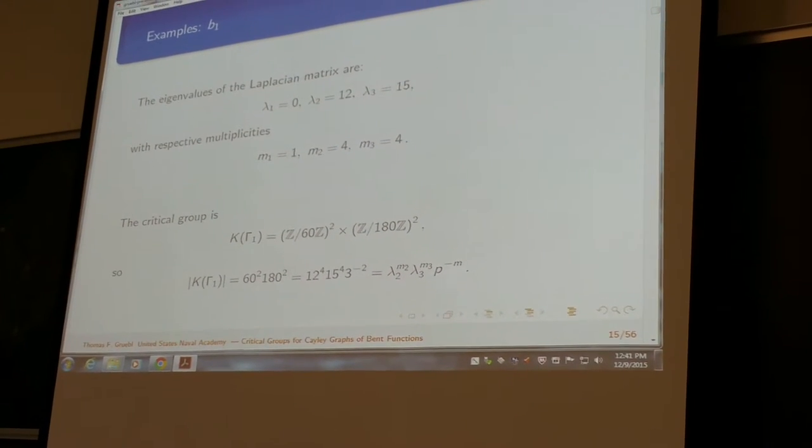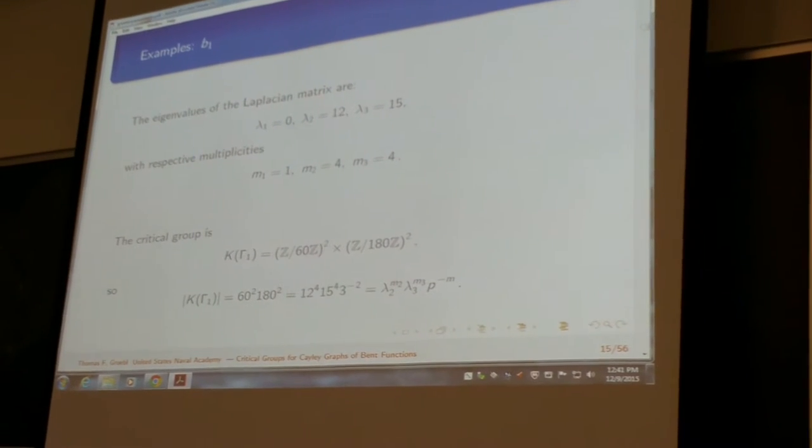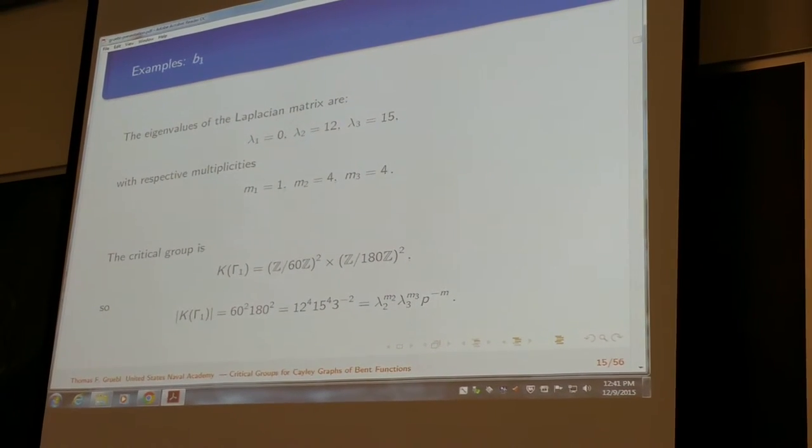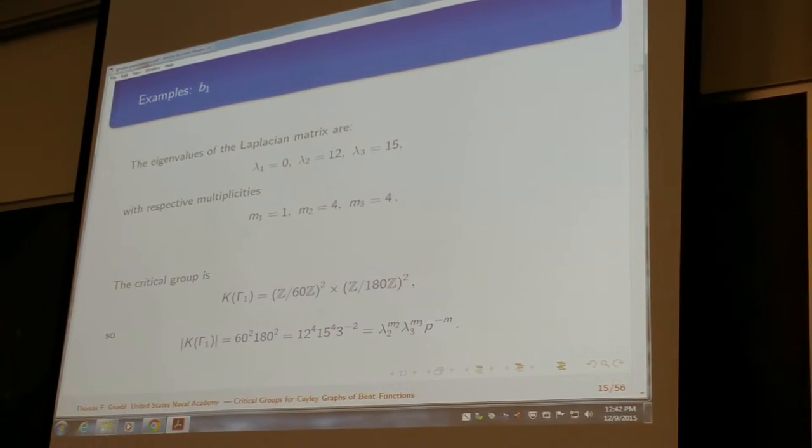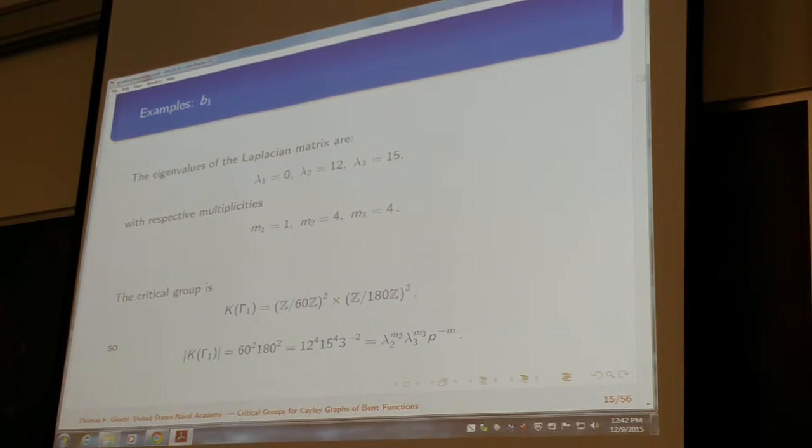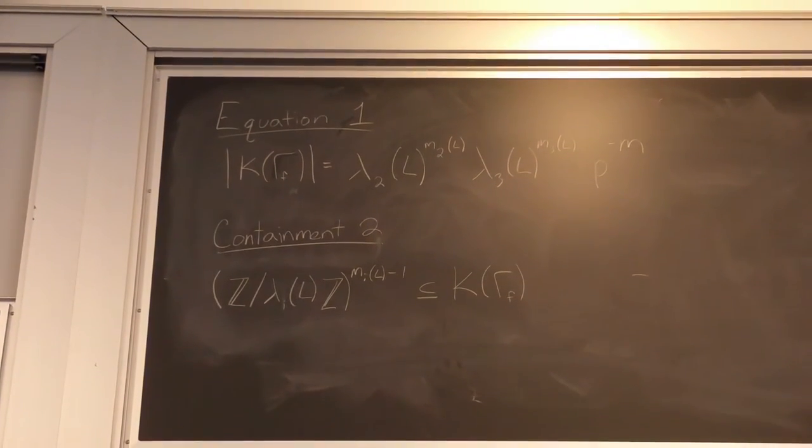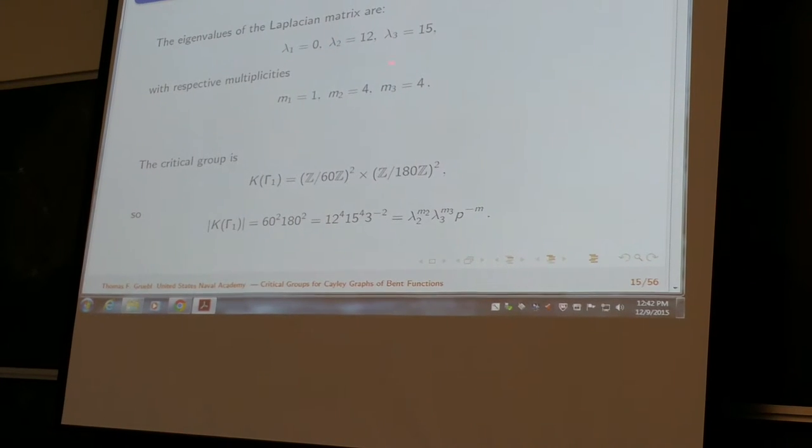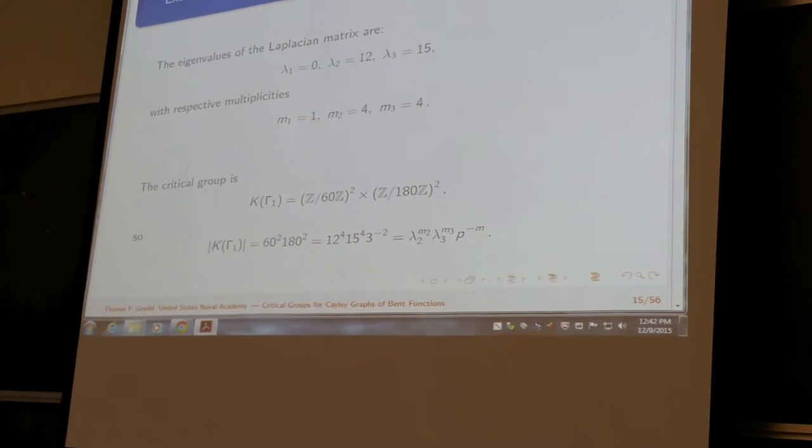So, what we really care about is the eigenvalues of the Laplacian, which here are lambda 1 equals 0, lambda 2 equals 12, lambda 3 equals 15, and they have respective multiplicities 1, 4, and 4. Again, 1, 4, and 4 popping up as they did in the Walsh transform. The critical group, we used SAGE to compute. It was k of gamma sub 1 is equal to Z mod 60Z squared cross Z mod 180Z squared. And then, we wanted to verify that equation 1 actually does hold, which is the equation we got from Lorenzini. And in fact, it does, the size of the critical group is 60 times 180, which is equal to lambda 2, 12 to its multiplicity 4 times lambda 3, 15 to its multiplicity 4 times p to the negative m, which would be 3 to the negative 2.